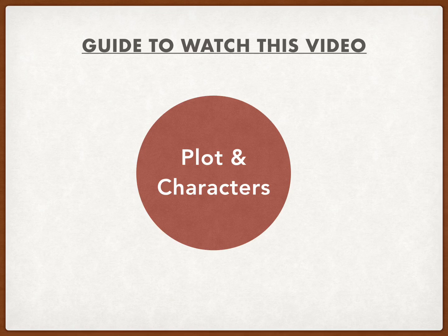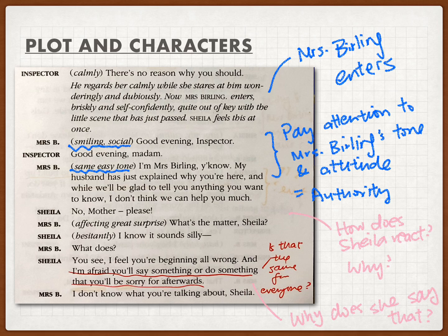If you remember, Act Two is about the inspector questioning Gerald and also Mrs. Birling. But before the inspector actually questioned Gerald, there was a conversation between the inspector and Mrs. Birling. So this part covers what happens after the inspector talked to Gerald a little bit, and then Mrs. Birling entered the room.